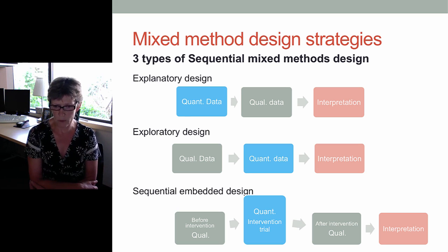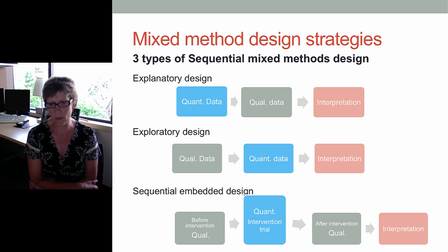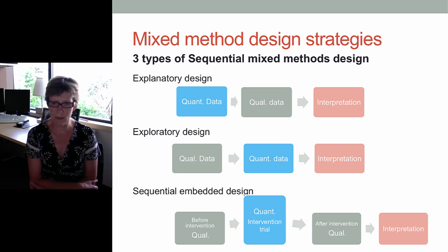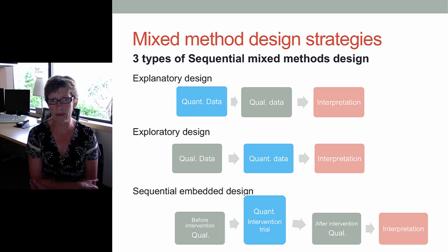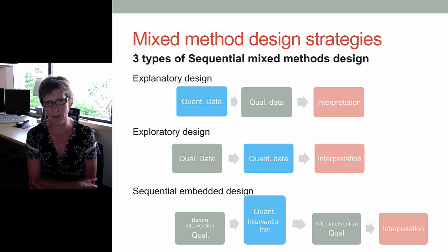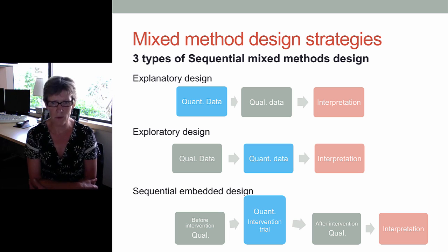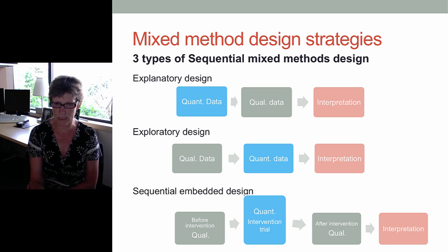Sequential can also be transformative — either can come first and the results are integrated into the interpretation phase and analysed together. Sometimes people will talk about sandwiching: you might start with a quantitative phase, do some qualitative exploration, and then end up with another quantitative portion. Similarly, you can start qualitative, then quantitative, and then explore some of the findings from that quantitative data.